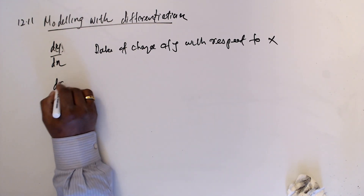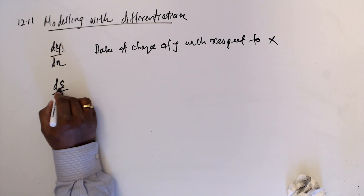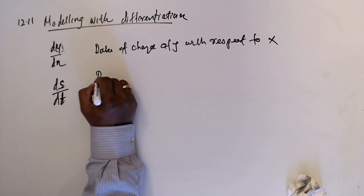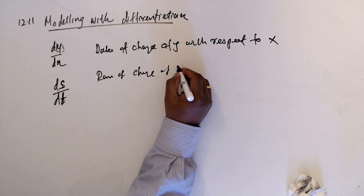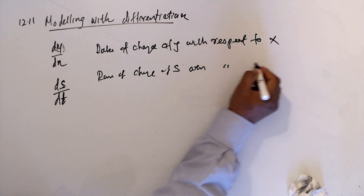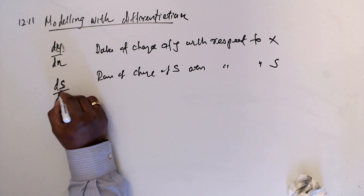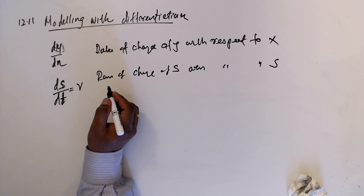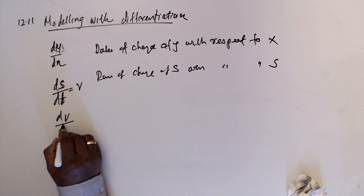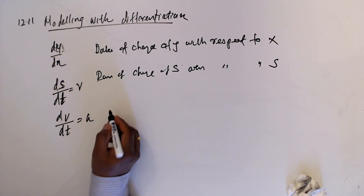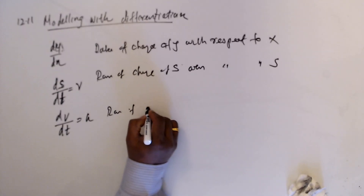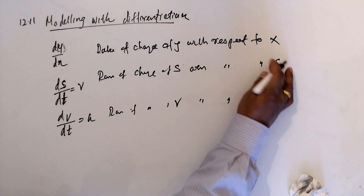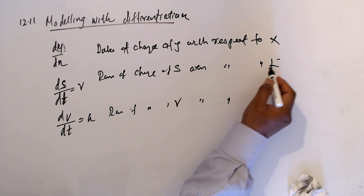Assume ds/dt, where s is displacement and t is time. The rate of change of displacement with respect to time is velocity. The rate of change of velocity with respect to time is acceleration — that is dv/dt. So ds/dt is the rate of change of s with respect to t.